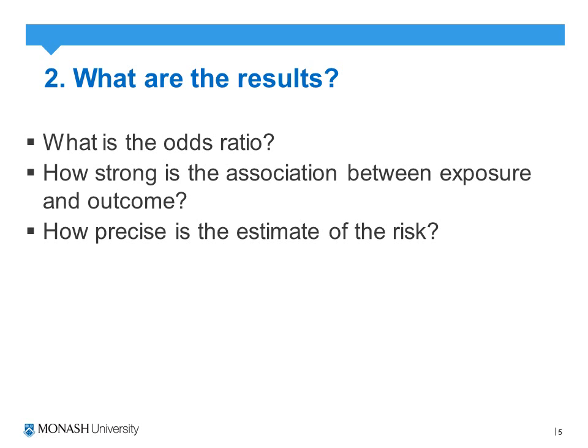The third question asks how precise is the estimate of the risk, which involves examining the confidence intervals. If the confidence intervals include one, this indicates no statistically significant difference between the cases and controls. If they do not include one, this indicates a statistically significant difference. Wide confidence intervals indicate a small sample size, meaning the study is less precise than a larger study with narrower confidence intervals.